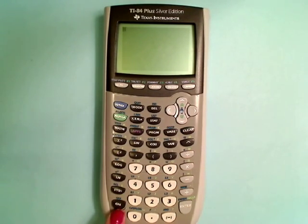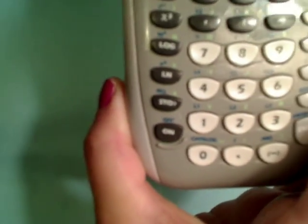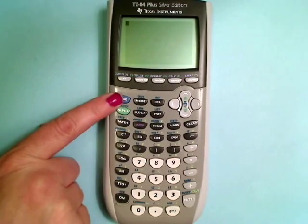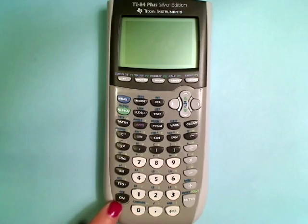So if we want to turn off the calculator, we use the same button. If you look closely at this calculator, you will see some blue writing just above that on button. And that blue writing says 'off.'